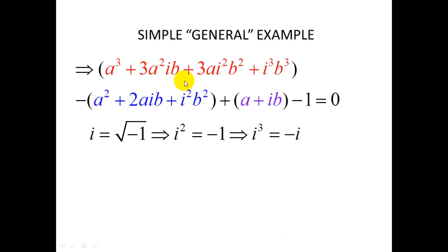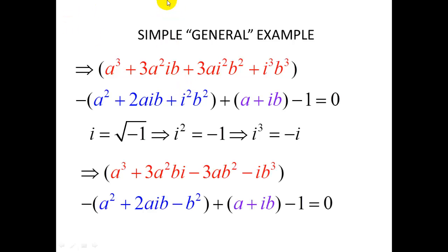this to the equation transforms it to this form: i²b² becomes -3ab² because i² = -1. Likewise, i²b² became -b². Other terms stay as is. Now I'll collect all real parts and all imaginary parts.